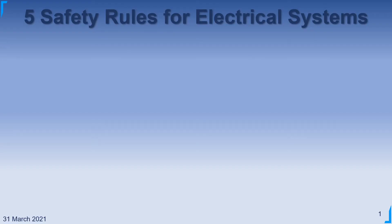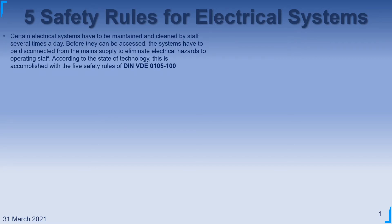Hi guys, today I will show you the five safety rules to be observed while operating electrical systems. Certain electrical systems must be maintained and cleaned by operating staff several times a day. To eliminate any electrical hazards, five safety rules are defined by the standard DIN VDE 0105-100.